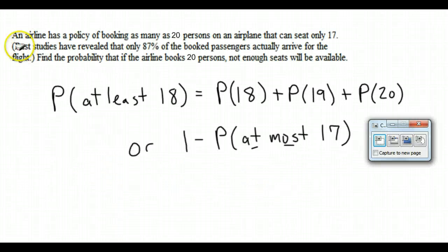So let's see if we can use it. In this scenario we've got an airline, say that they might book up to 20 people on an airplane, even though it can only seat 17, because studies have revealed that only about 87% of people will actually show up. So find the probability if the airline does book 20 people, not enough seats will be available. So that means if they book 20, not enough seats are available if it goes over 17. So that's the probability of at least 18.